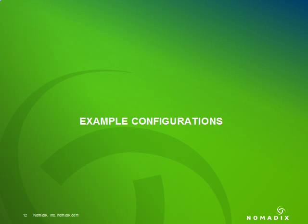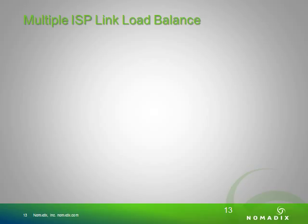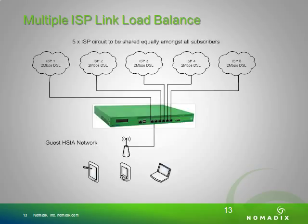Now we will go over some example configurations of load balancing and multi-WAN. If you have multiple ISP links for load balancing, using the AG5800 we have five different ISP connections using two megabits each connection. The sixth interface is a subscriber interface connecting to guests. In this example, there is a total of 10 megabits to share between all guests. However, one guest would not be able to get more than the two megabit link that the WAN interface it is running over grants it.